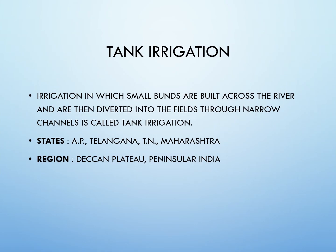Tank irrigation is when small banks are built across a river and water is diverted into fields through narrow channels. It is useful in areas dependent on rainfall. Tanks are constructed in areas of natural depression by building earthen embankments or masonry walls. This water is used in the dry season. The main states using tank irrigation are Andhra Pradesh, Telangana, Tamil Nadu, and Maharashtra, mostly in the Deccan Plateau and Peninsular India.